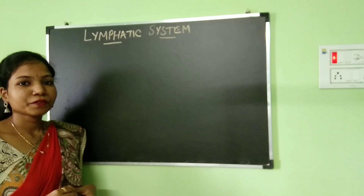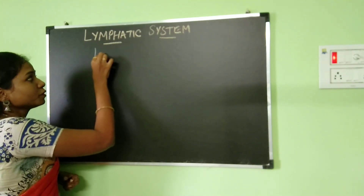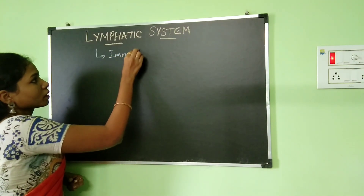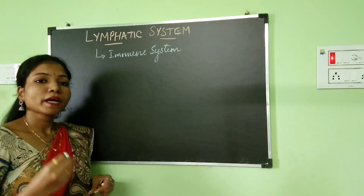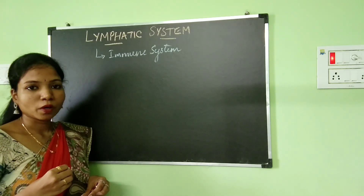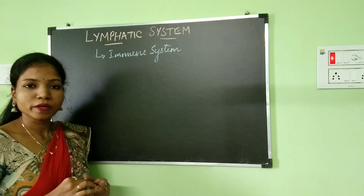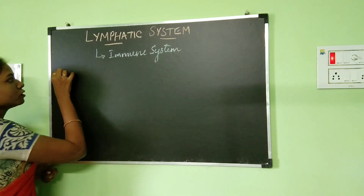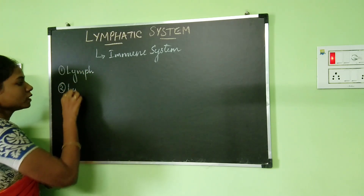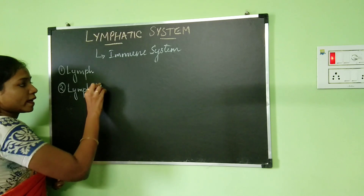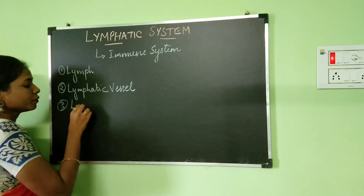Hello everyone. In today's video, we are going to be discussing about the lymphatic system. The lymphatic system is a part of our body's immune system, which means it is going to defend the pathogens which are entering inside our body. So the lymphatic system plays a very important role in providing disease resistance to an individual. The lymphatic system consists of lymph, lymphatic vessels, and lymph nodes.